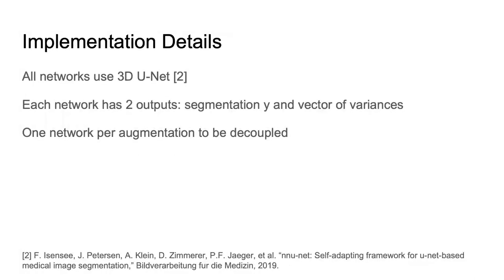All the networks in our model use the 3D U-Net as their base architecture, where the output of each CNN is modified with two output heads: one for the segmentation prediction and one for the uncertainty. Each uncertainty output has a different number of channels depending on the number of uncertainties we wish to decouple.